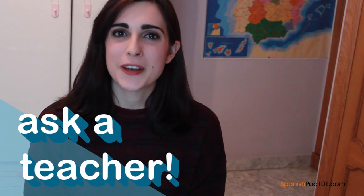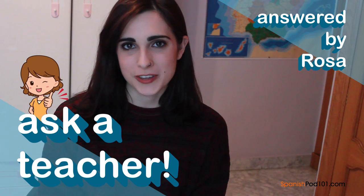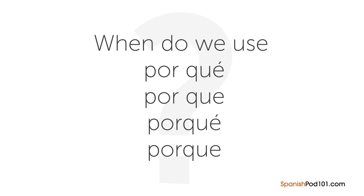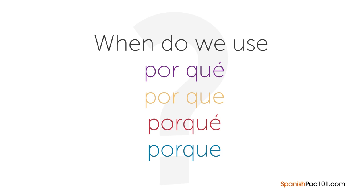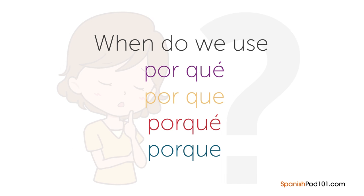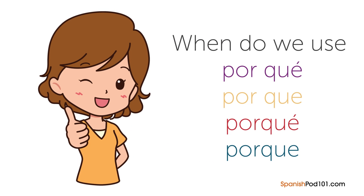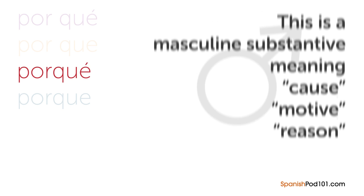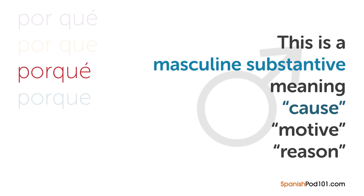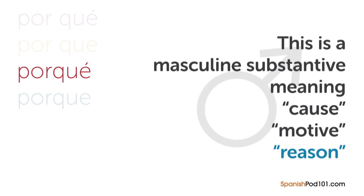Hi everybody, Rosa here. Welcome to Ask a Teacher. The question for this lesson is: when do we use 'porqué,' '¿por qué?,' 'porque,' and 'por que'? Separated? Together? With an accent? Without an accent? In this lesson, we'll teach you how to choose the right one. Let's start with 'porqué' — all one word with an accent over the E. This is a masculine noun meaning cause, motive, or reason, and normally an article precedes it. Example: 'No quiero saber el porqué' — I don't want to know the reason.